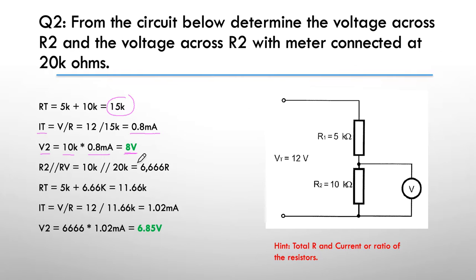Then what we did is we paralleled R2 with the resistance of the voltmeter. Remember they told us we had 20k ohms. So parallel loads gives us 6.66k, or 6,666 ohms. I then worked out the new R total, so that's the 5k plus 6.66 gives me 11.66k.